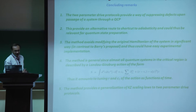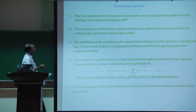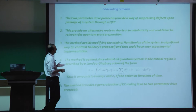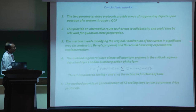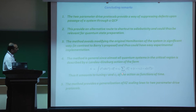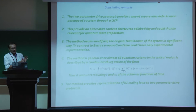In conclusion for the first part: a two-parameter drive protocol provides a way of suppressing defects on passage through a quantum critical point, providing an alternative route to shortcut to adiabaticity relevant for quantum state preparation. The method avoids modifying the original Hamiltonian significantly - in contrast to Berry's proposal - and in principle could have easy experimental implementation. It also provides a generalization of Kibble-Zurek scaling to two-parameter drive protocols.